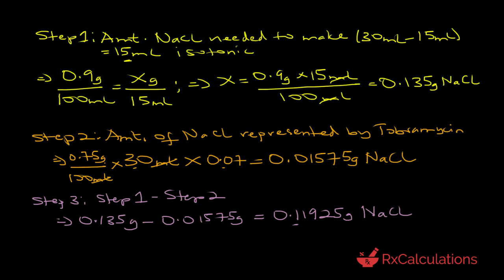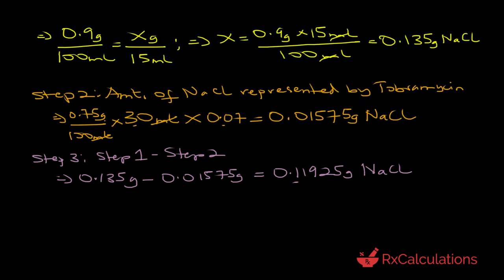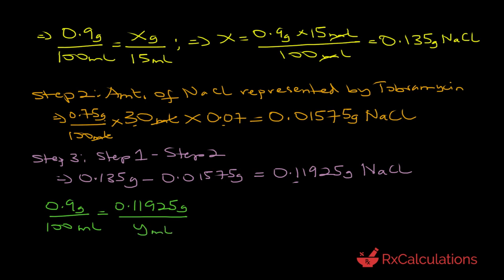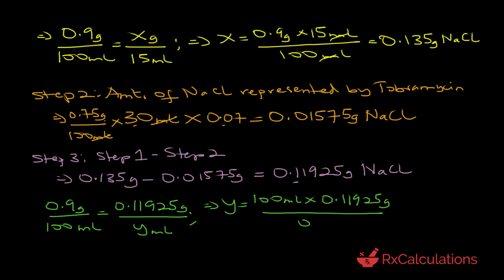We need to find the volume of 0.9% sodium chloride solution equivalent to 0.11925 grams. Setting up a proportion: 0.9 grams per 100 ml equals 0.11925 grams divided by Y ml. Solving for Y: Y equals 100 ml times 0.11925 grams divided by 0.9 grams. The grams cancel, giving Y equals 13.25 milliliters.